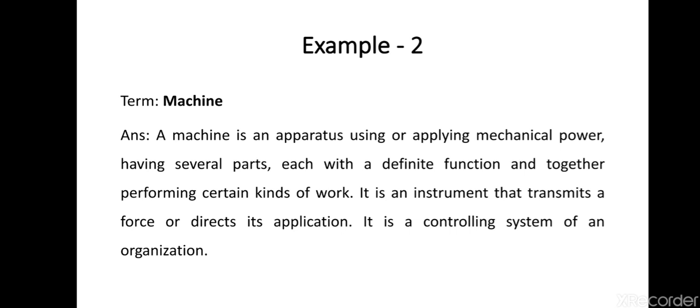Let us see example two, a simple term: machine. We start with a simple definition. A machine is an apparatus using or applying mechanical power, having several parts, each with a definite function, and together performing certain kinds of work. It's a single sentence, so up to this it is a formal definition. If we add two more sentences to make it extended...